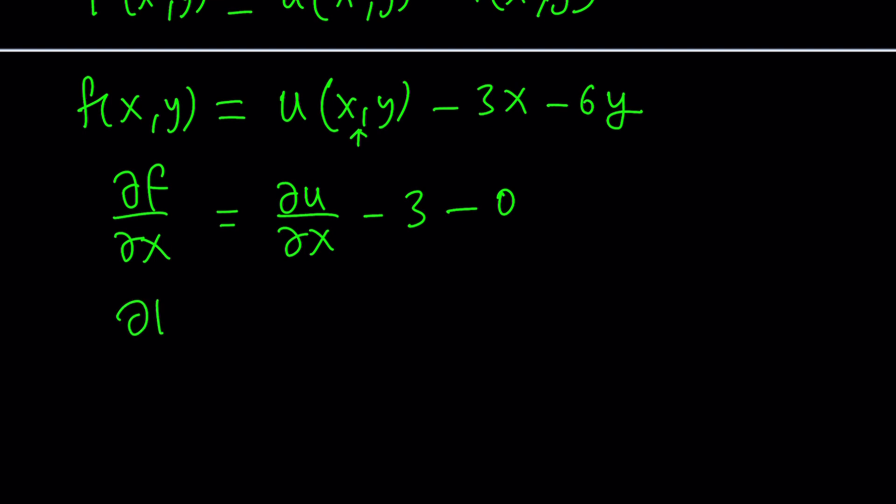And then we're going to find ∂f/∂y. Similarly, we're going to do the ∂u/∂y first, and then minus 0, the derivative of x with respect to y is 0, minus the derivative of 6y is just going to be 6. Now, what does this mean?